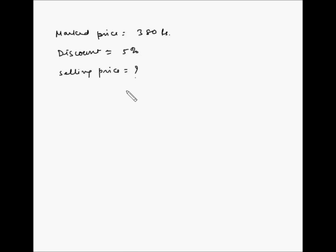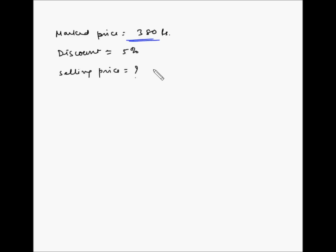Let's say you go to a store to buy some groceries and as soon as you enter the store, you see a board which says a discount of 5% will be provided on all items. You pick up the item you want to purchase, and the marked price on the label says rupees 380. So let's see how to calculate the selling price.